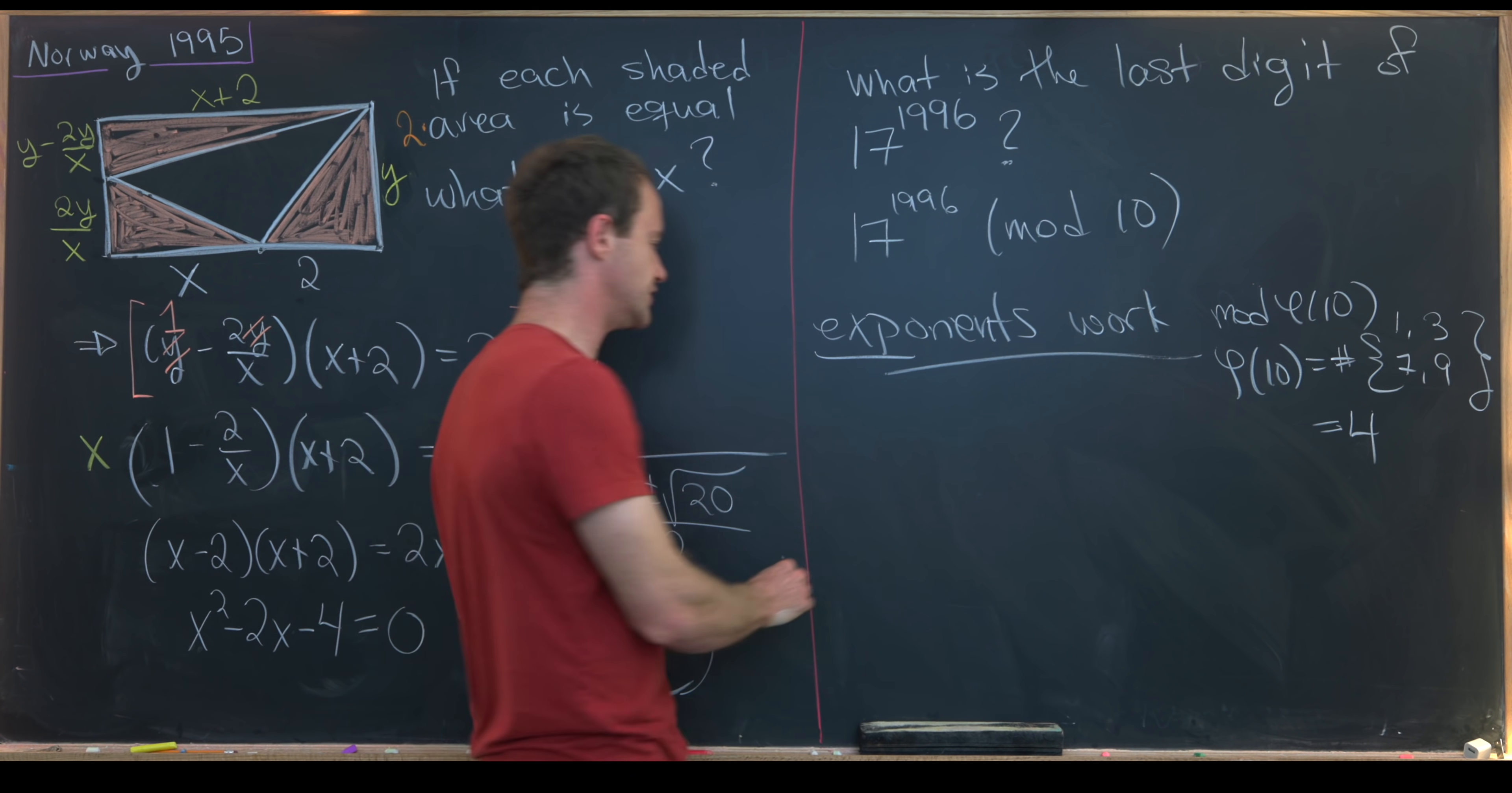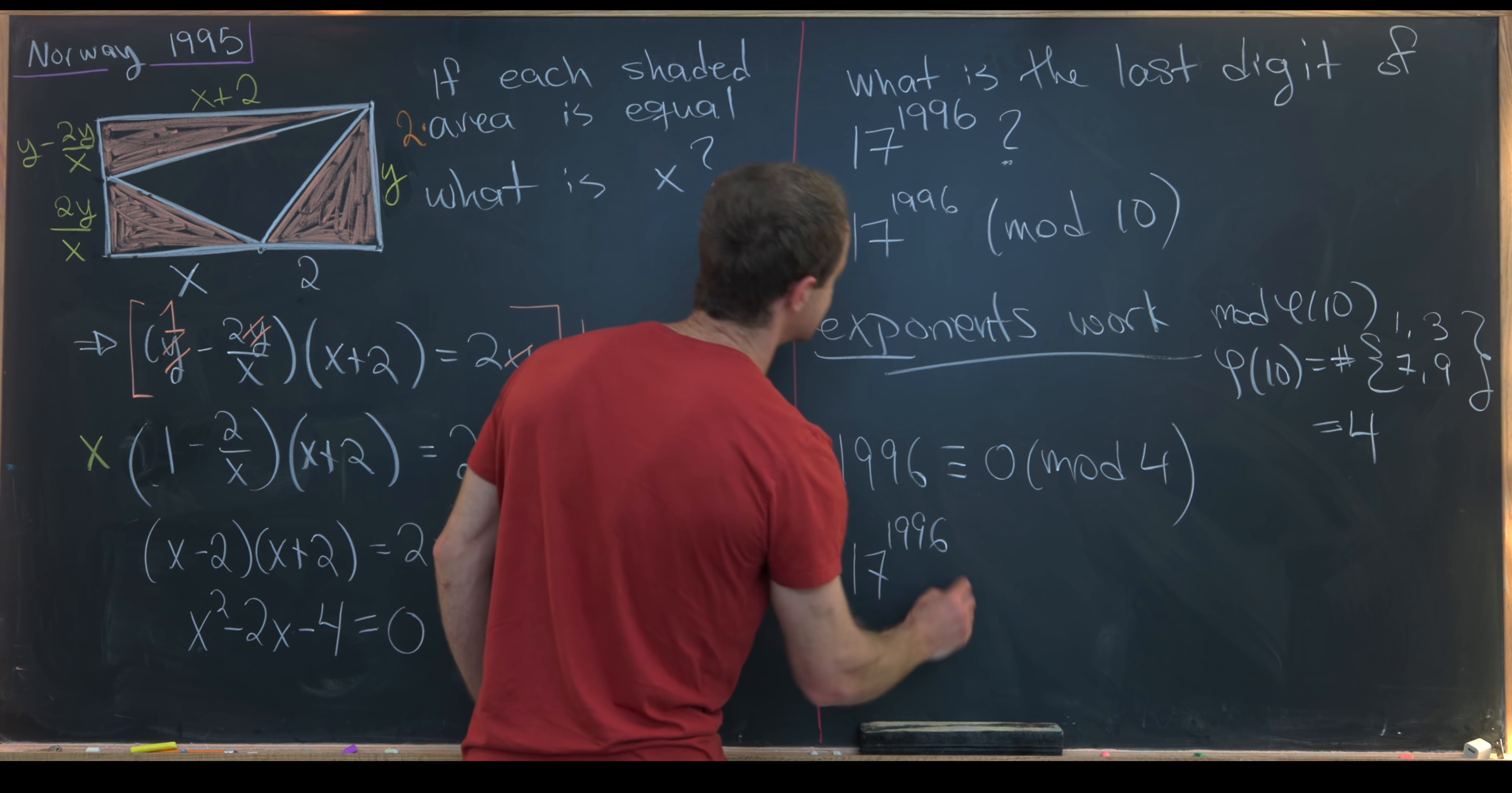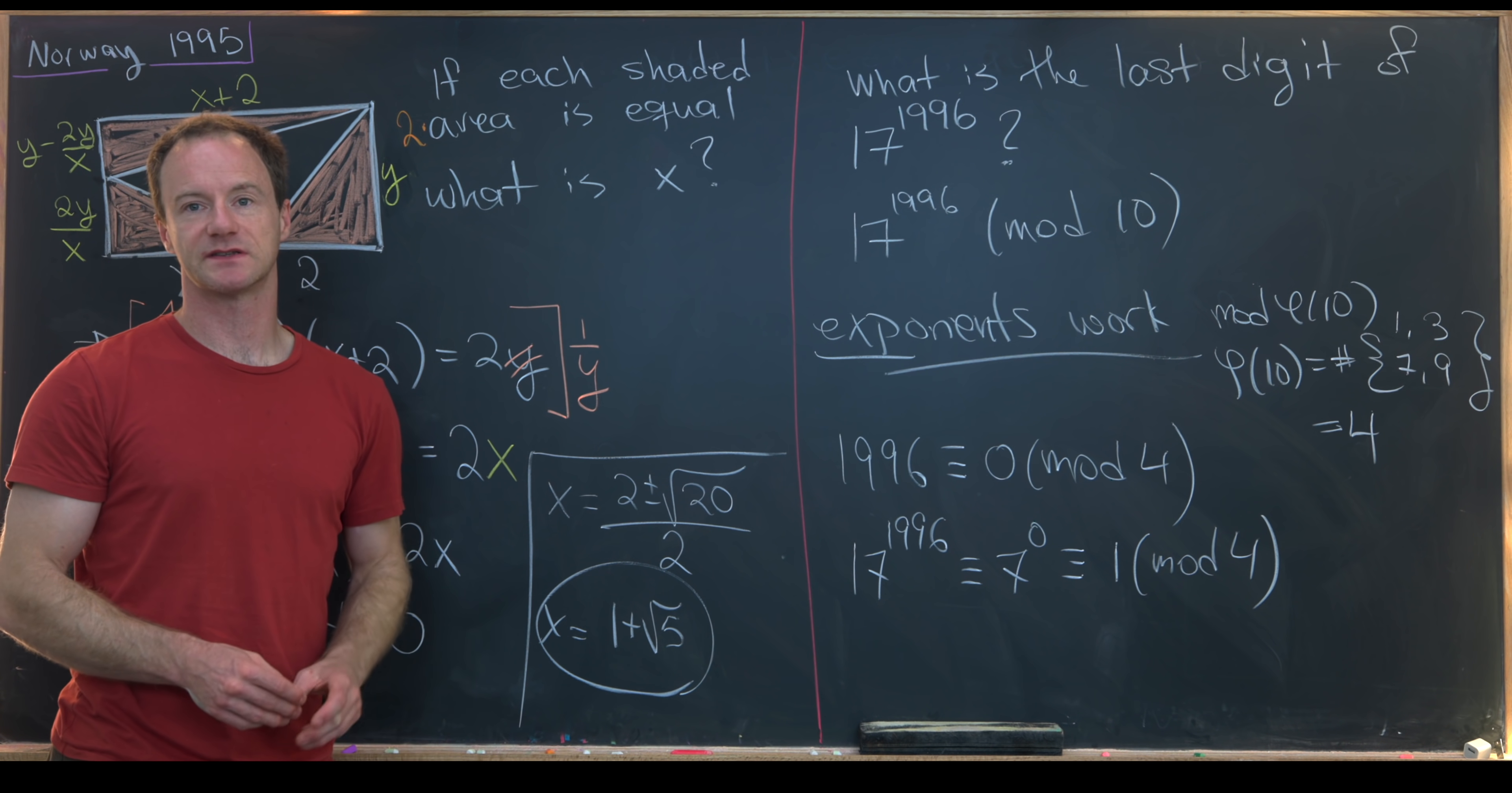Now we can reduce 1996 mod 4, which is fairly straightforward. 1996 is 0 mod 4. Then reducing the base mod 10 and the exponent mod 4, we see that 17 to the 1996 is congruent to 7 to the 0, which is congruent to 1 mod 10. So that tells us that the last digit of 17 to the 1996 is just 1. And that's a good place to stop.